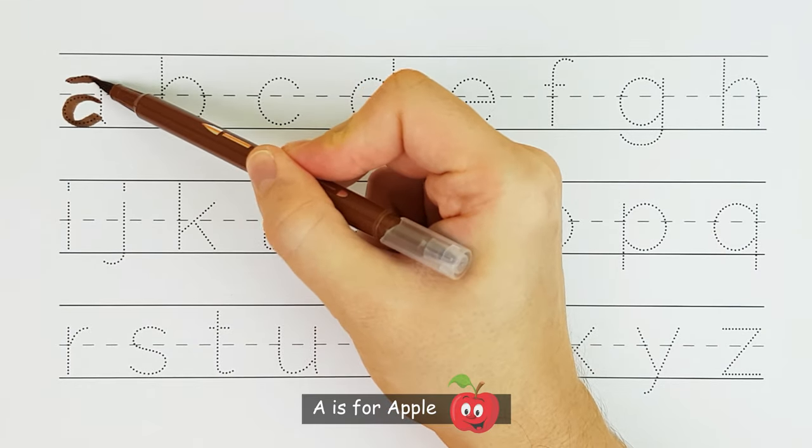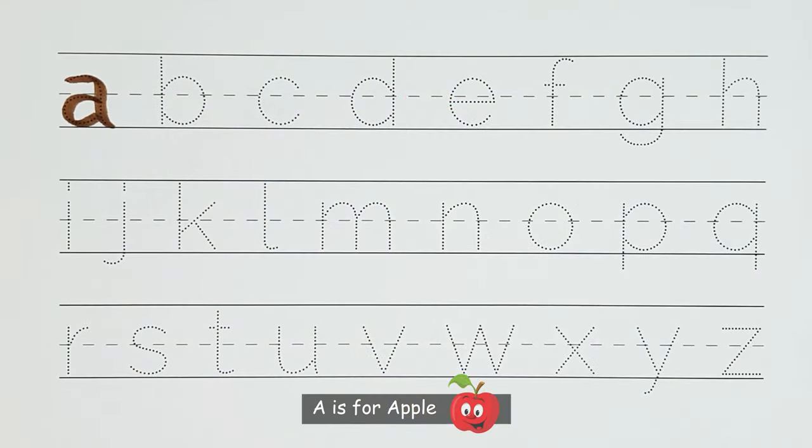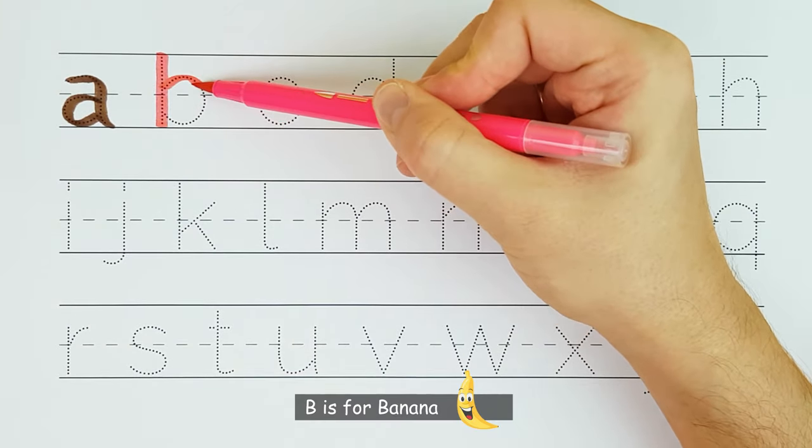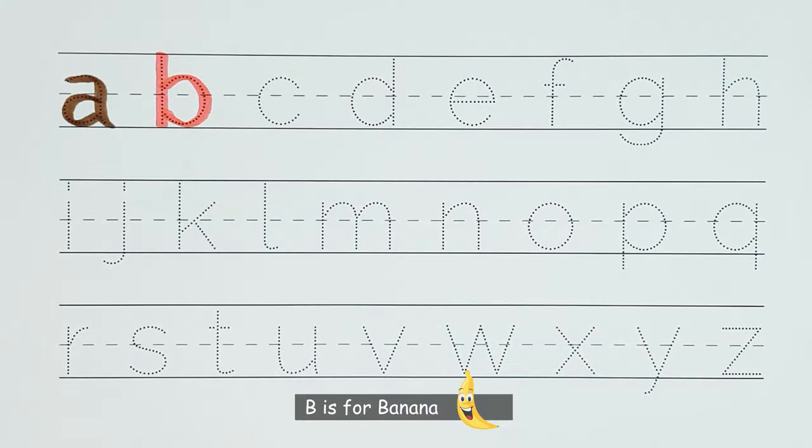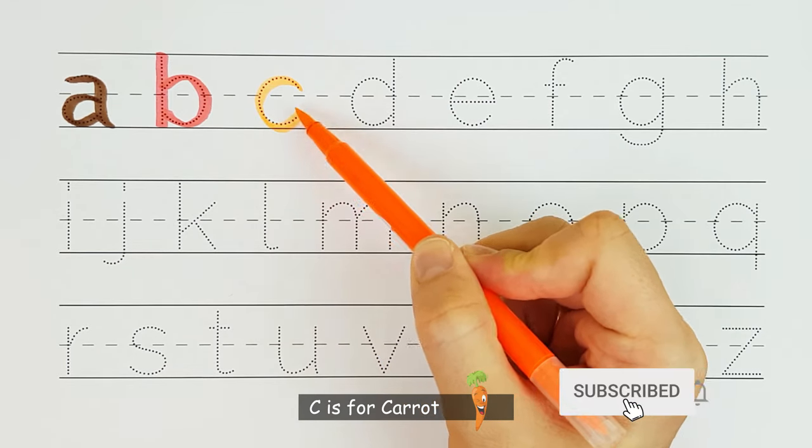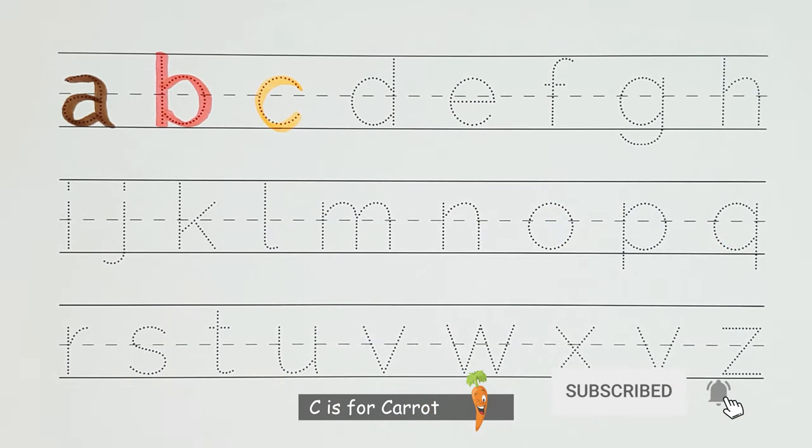A. A is for apple. A. B. B is for banana. B. C. C is for carrot. C.